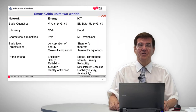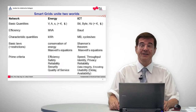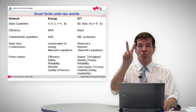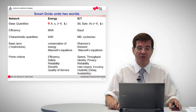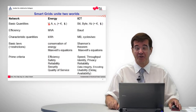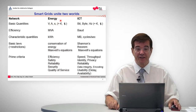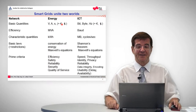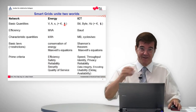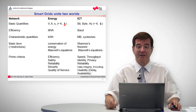First of all, what is a smart grid? Smart grids unite two worlds. One is the world of energy, which is given in the terms of volts, amps, seconds — so voltage, current, time — and also including, not to forget, these physical quantities in quotation marks: the euro and the paragraphs, so it is about money and regulation.